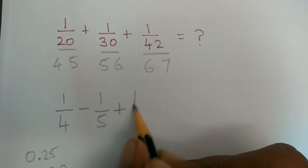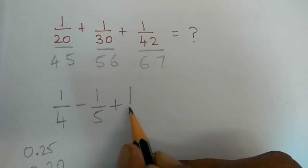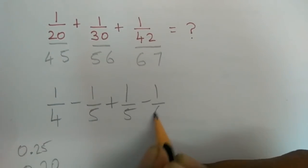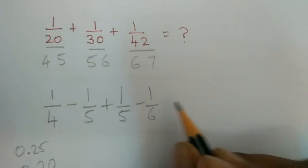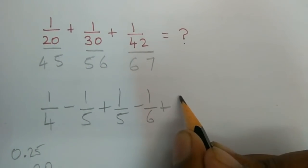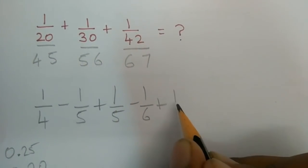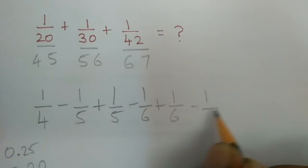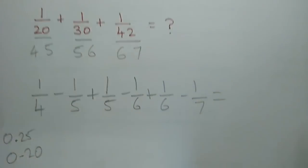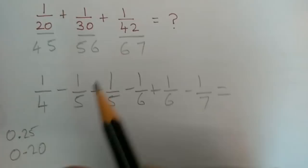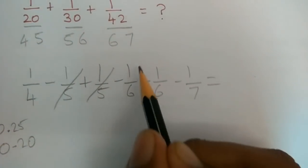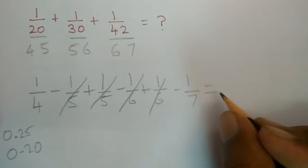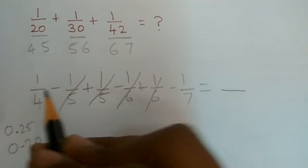Next, let's see: 1 by 4 minus 1 by 5, plus 1 by 5 minus 1 by 6, plus 1 by 6 minus 1 by 7. When you apply this telescoping, it will be easier to solve — the middle terms cancel out.